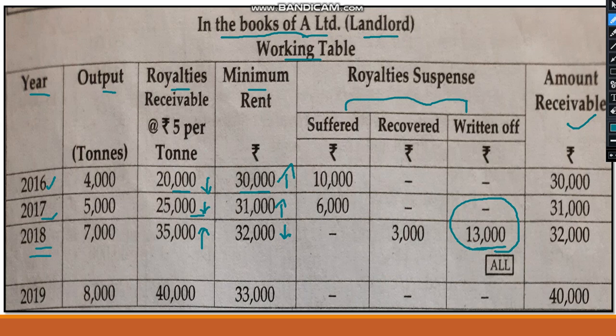In 2019, royalty is 40,000 and minimum rent is 33,000. Minimum rent is less and royalty is more — this is case number two. You have to pass all three entries of case number two in 2019. So observe the working table carefully: analyze which column shows royalty less or minimum rent more, apply case number one, two, or three accordingly, and pass the journal entries for that particular year.